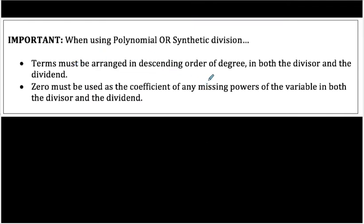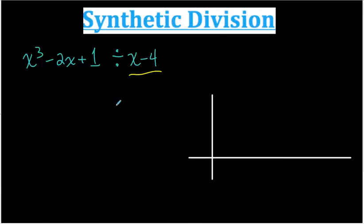Terms have to be arranged in descending order of degree in both the divisor and dividend. And the 0 must be used as the coefficient of any missing powers of the variable in both the divisor and the dividend. So when we're talking about synthetic division, we're really just looking at the dividend for these two rules because we know our divisor is linear.